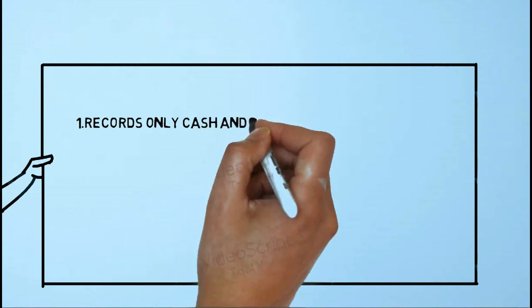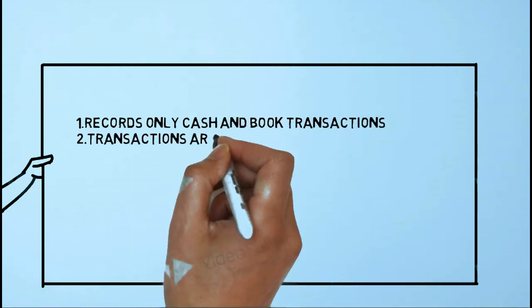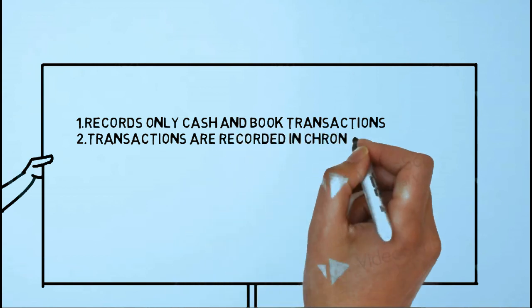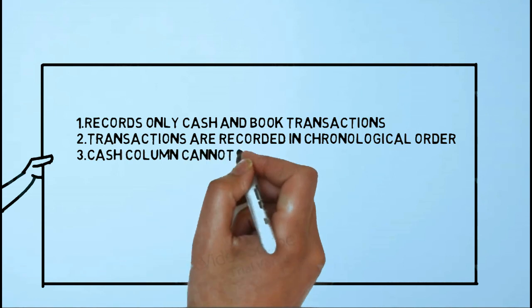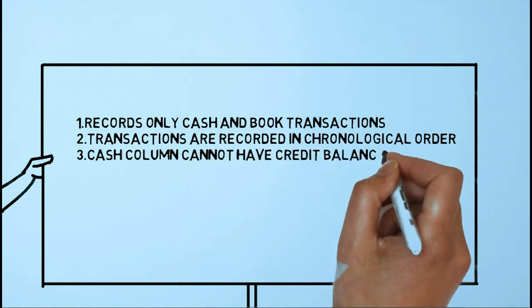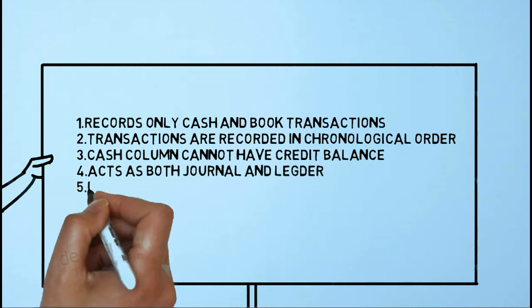Now let's see some features of cash book. Point number one: it records only cash and bank transactions. Point number two: transactions are recorded in chronological order. Point number three: the cash column cannot have a credit balance. Point number four: it acts as both journal and ledger. Point number five: it follows double entry system.